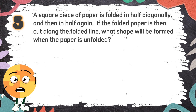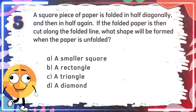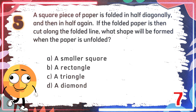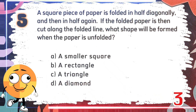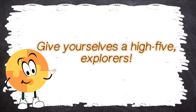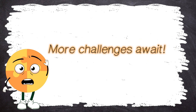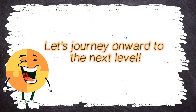Number 5: A square piece of paper is folded in half diagonally, and then in half again. If the folded paper is then cut along the folded line, what shape will be formed when the paper is unfolded? The choices are: A. A smaller square, B. A rectangle, C. A triangle, D. A diamond. The correct answer is C, a triangle. Give yourselves a high five, explorers! You conquered the first leg of our math quest, but the adventure doesn't stop here. More challenges await. Can you handle the heat? Let's journey onward to the next level!